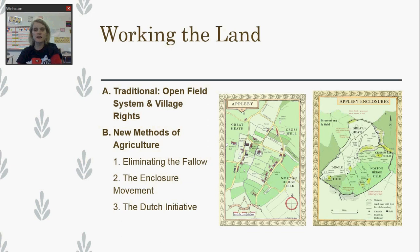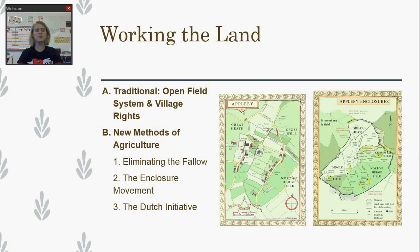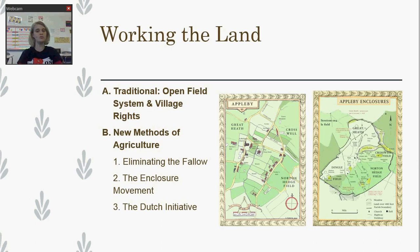Traditionally, going back to the Middle Ages in Europe, people had what's called the open field system. If you look on this map, you can notice around the village there are all these fields available for people to use — whether it was to grow crops, graze their animals, collect food, or whatever else they needed to do. It was land that was there for people to use as they needed to.